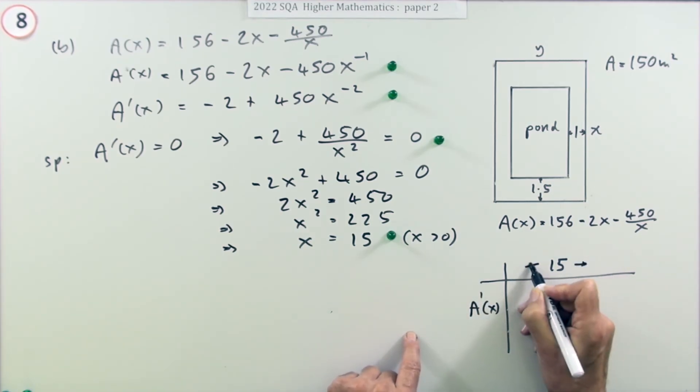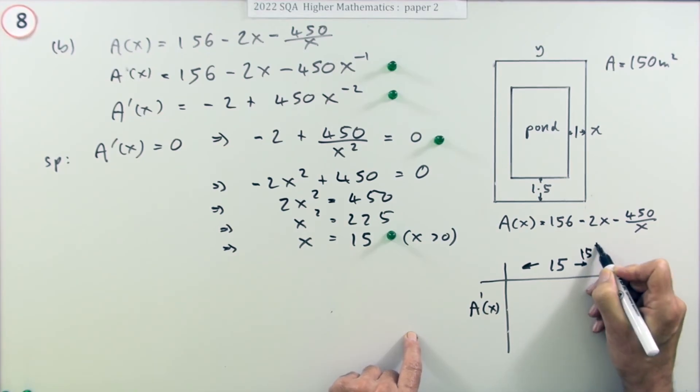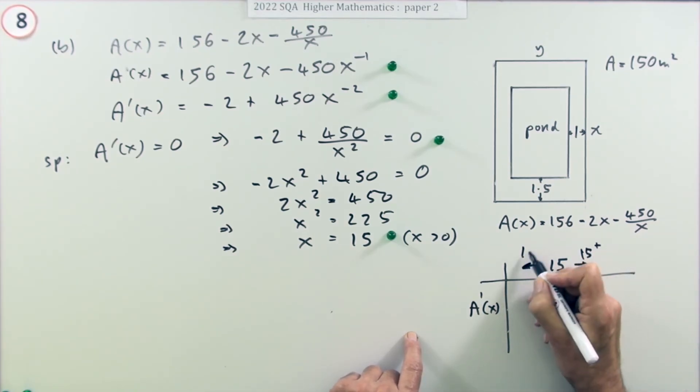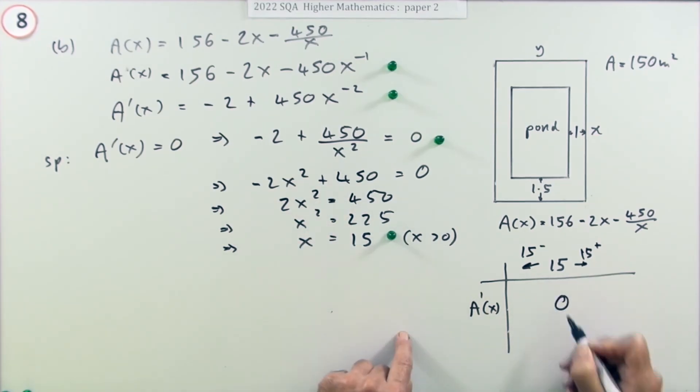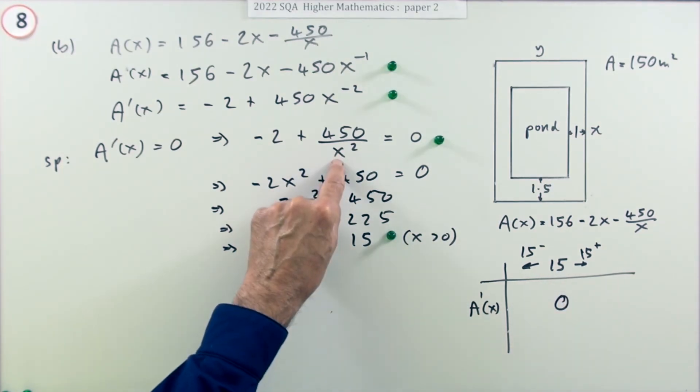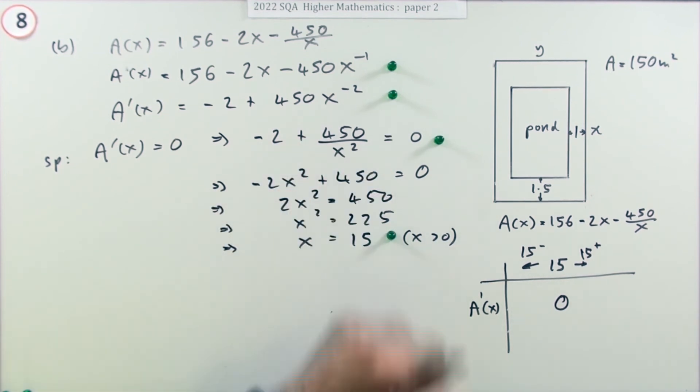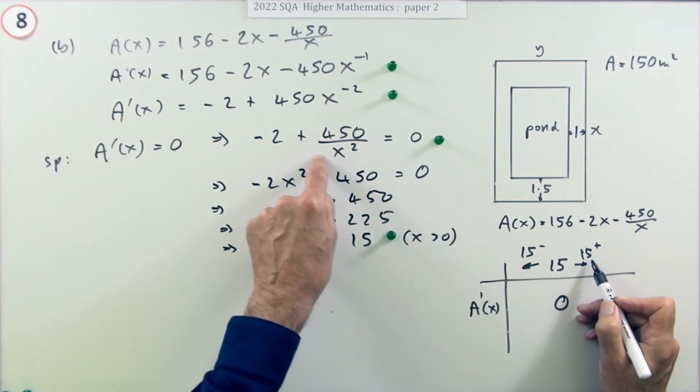When you say something above and something below, you really mean something just slightly above and just slightly below. You know what happens when it's 15: if you put 15 into that, you get the answer zero. You don't actually need to choose numbers here. You could just cheat because it's told you it's a maximum. If it's a maximum, it's going to go like that. That's going to have to be positive, negative. You can even just put in positive, negative if you're sure your 15 is correct.